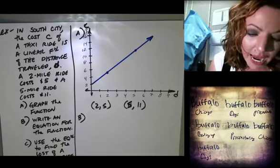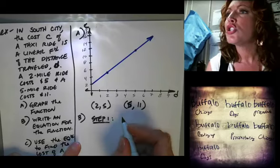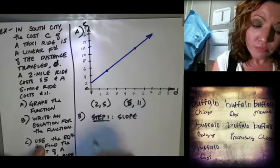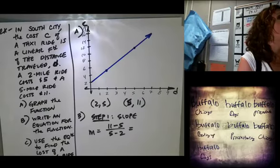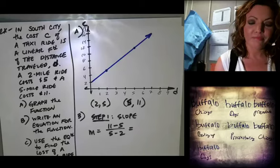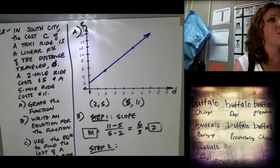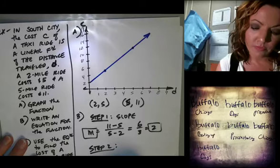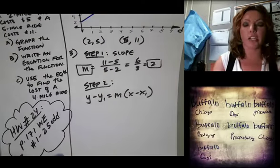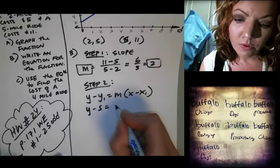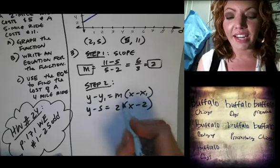Now, following the same steps, we have the graph and we want to write an equation for the function. Step one: find the slope. Step two: y minus y₁ equals m times (x minus x₁). Plugging in our values — using the point (2, 5) and slope m — we set it up.